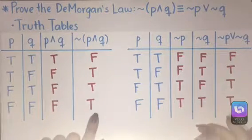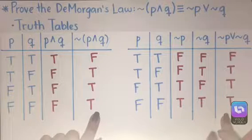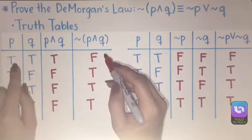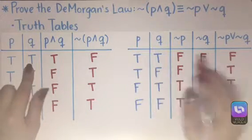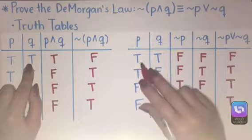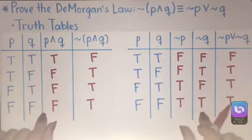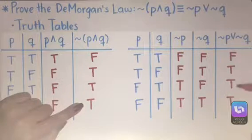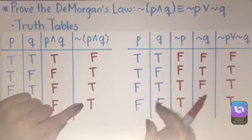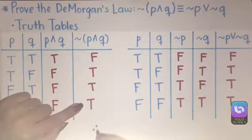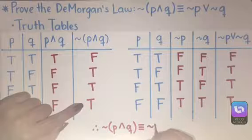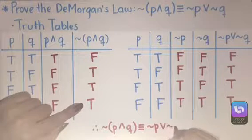Now we have the same values for each side. The negation of (P and Q) is false when P is true and Q is true — and so is the right-hand side. Since the truth tables gave us the same truth values in the same locations for the same values of P and Q, we know that by using these truth tables, the negation of (P and Q) is logically equivalent to the negation of P or the negation of Q.